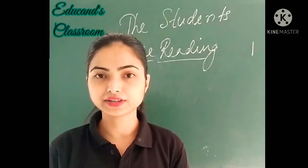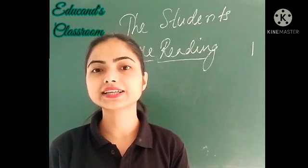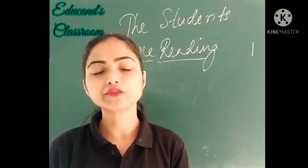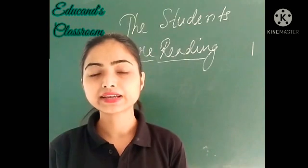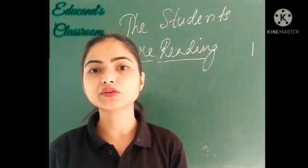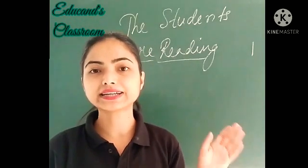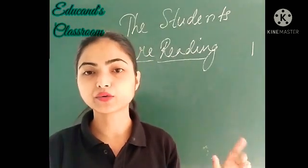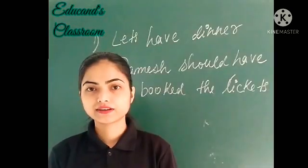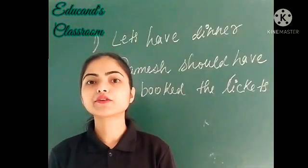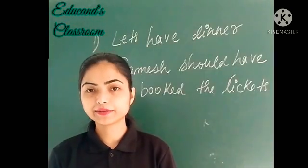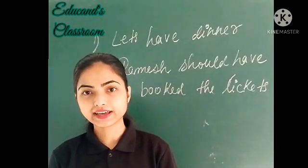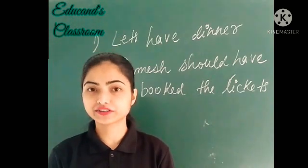Toh jho auxiliary verb hai, woh bataye ga ki jho activity ho raha hai woh past, present, ya future mein ho raha hai. It will also tell about the voice — that is subject aur jho verb hai, uska kya relation hai. Certain type of words they can be used both as auxiliary and as action verb.